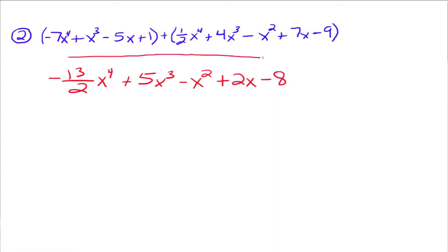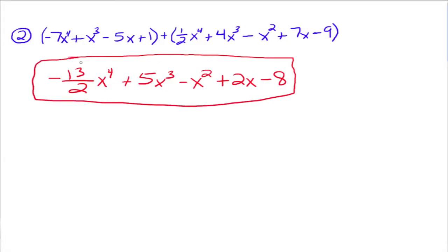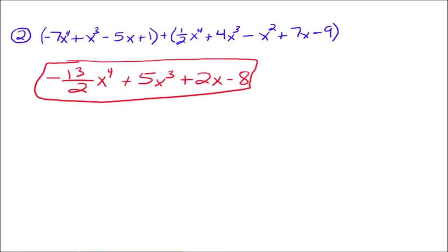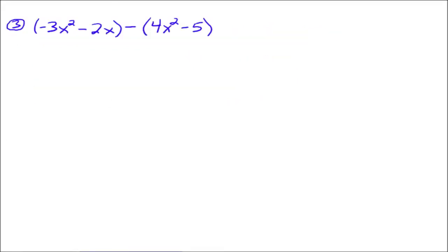That is our resultant polynomial from adding up the first two polynomials. So to add polynomials, that's really all there is to it — you just combine like terms. Now subtraction is similar, but we do need to put one more step in.